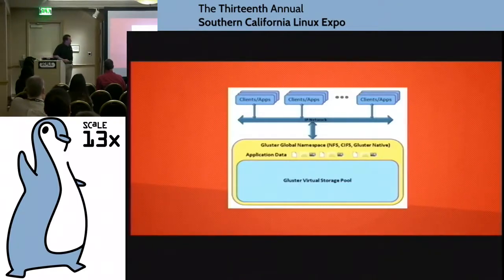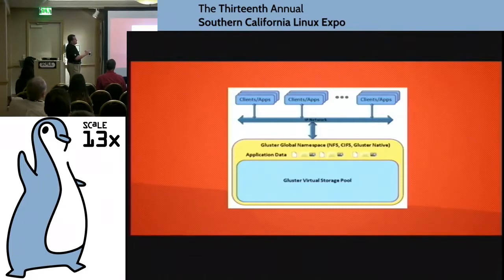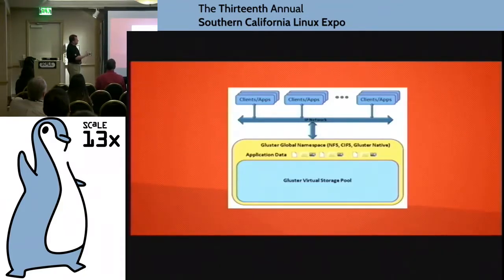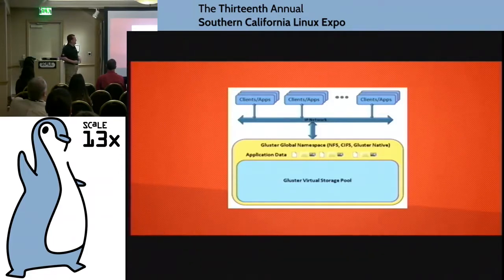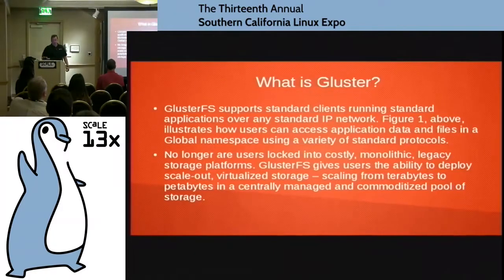The architecture is: you've got the Gluster virtual storage pool. This is actually storage distributed across multiple physical servers, VMs, AWS instances, or whatever. You've got a whole stack of machines that present all of those disparate storage components as a single namespace. Then you share that out across your network to all the clients and applications. It's super distributed, and you'll see it's actually really simple to set up.